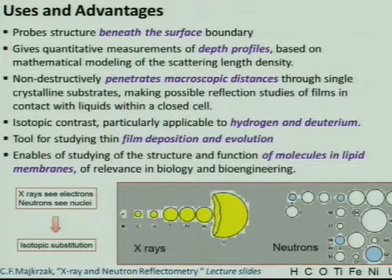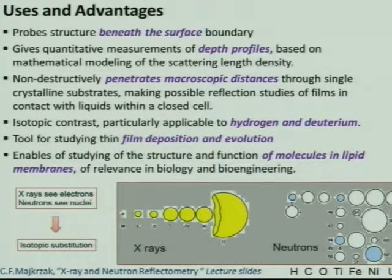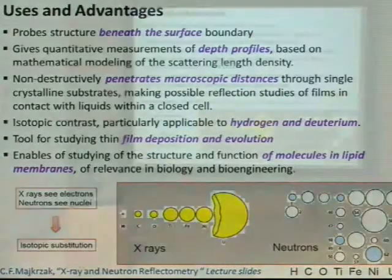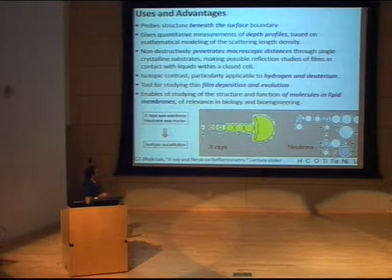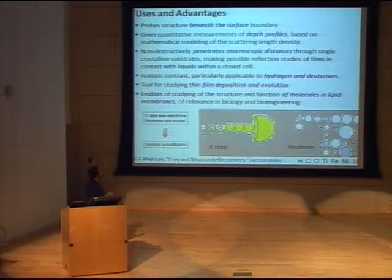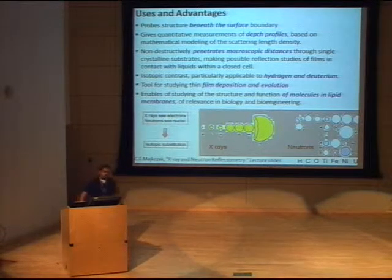The main advantage of neutron reflectivity is that it can non-destructively interrogate subsurface material layers and give you information about depth profiling for the scattering length density. The advantages of using neutrons in this configuration are that neutrons can penetrate microscopic distances, and you can use isotopic contrast — hydrogen versus deuterium — to highlight what you want to see. This makes it an excellent technique for studying thin film growth like epitaxial growth, as well as studying molecules, lipids, and biomolecules on the surface of liquids.